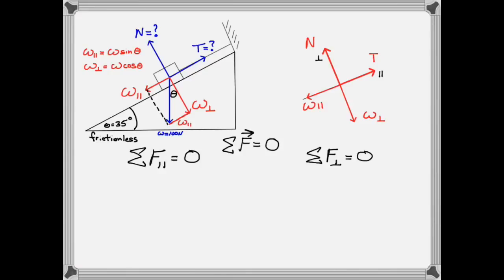In the parallel direction we have T being a positive force and W parallel as negative. And in the perpendicular direction we have the normal force positive and the W perpendicular as negative.